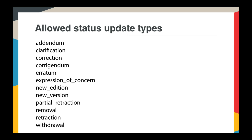Of course other things can happen to content - you can have minor updates such as the publication of the version of record when online early has been available, or perhaps the addition of comments, replies, or typo corrections. But those aren't considered significant enough to trigger an alert to the reader. There are places within Crossmark where you can add this information - there's a More Information section I'll show you in a moment.